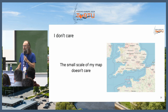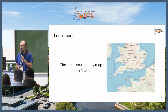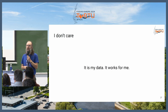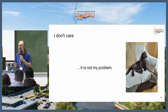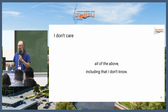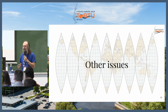For instance, because the scale of the map is very large or very small. At that scale, having an accuracy of one metre or even 100 metres, you don't notice it. Or because your data works for you — you don't care. Or it's not your problem. Or all of the above, including I don't know.